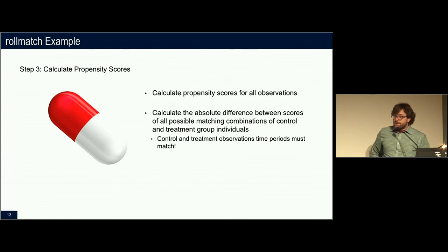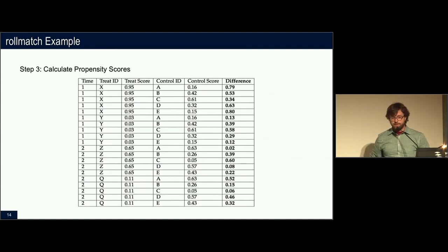Step three, we're going to calculate propensity scores just like any other person calculates propensity scores. The package has a few different options for how you would calculate them. And then you're going to calculate the difference between all the treatment and all the control observations. And that looks like this large table here. So we're comparing all the treatment IDs to all the control IDs. And the difference column is how different their propensity scores were.